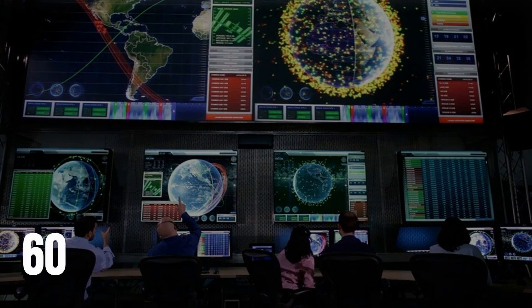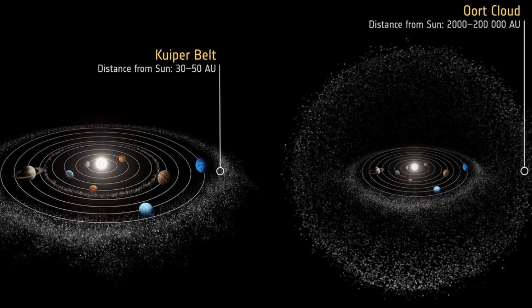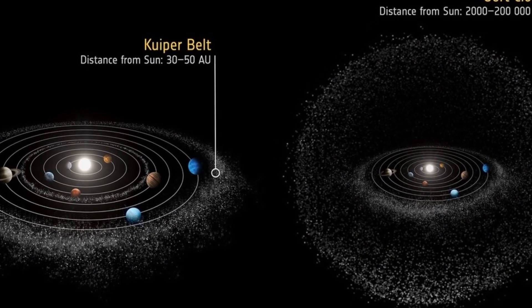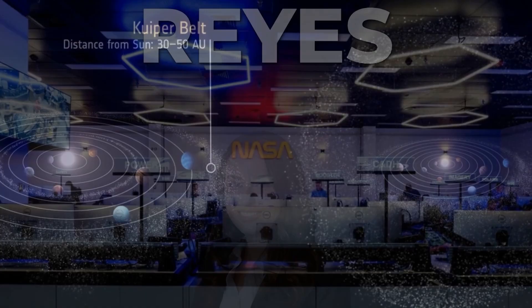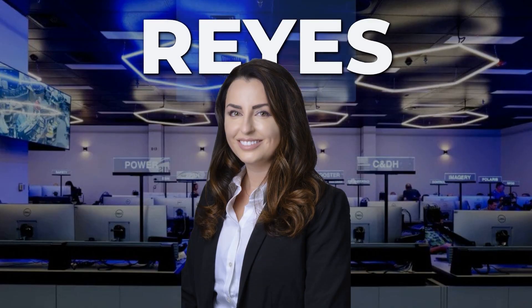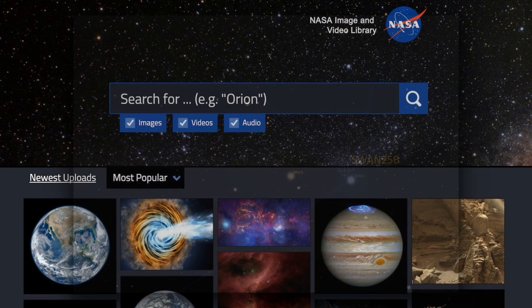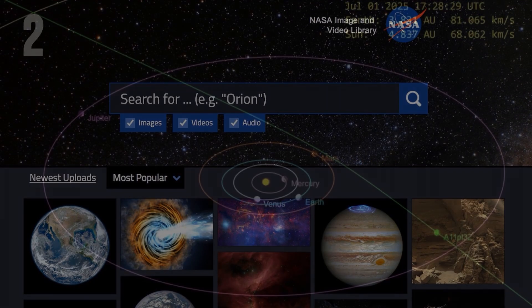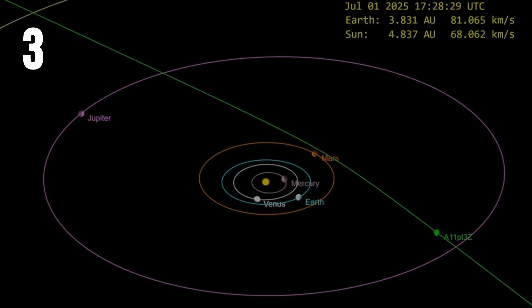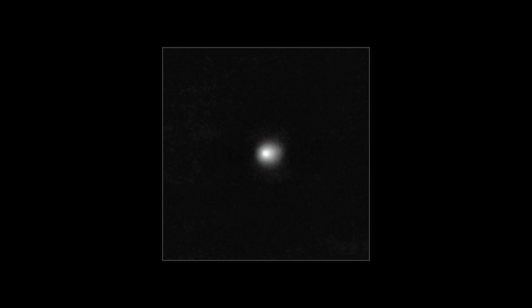And the speed sealed it, nearly 60 kilometers per second relative to the sun, far beyond what gravity alone could have given it from any planet or Kuiper Belt origin. Within hours, Dr. Natali Reyes and colleagues at Atlas cross-checked against the Minor Planet Center's database. No match. The Minor Planet Center issued a circular, confirmation that this was only the third time in history astronomers had caught an object on a one-way trip through our solar system.